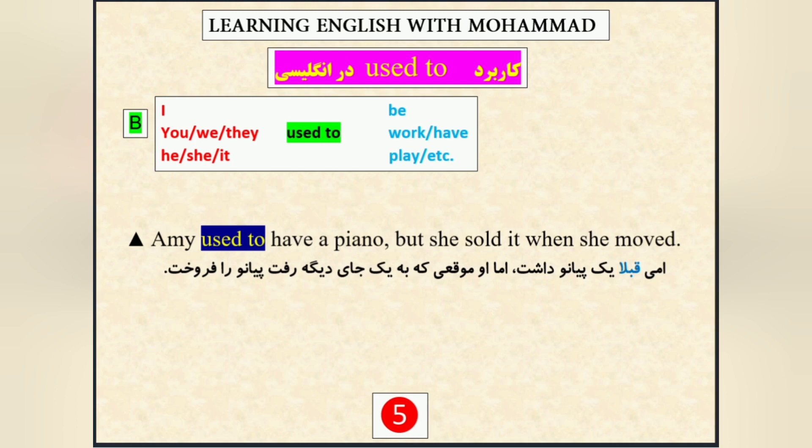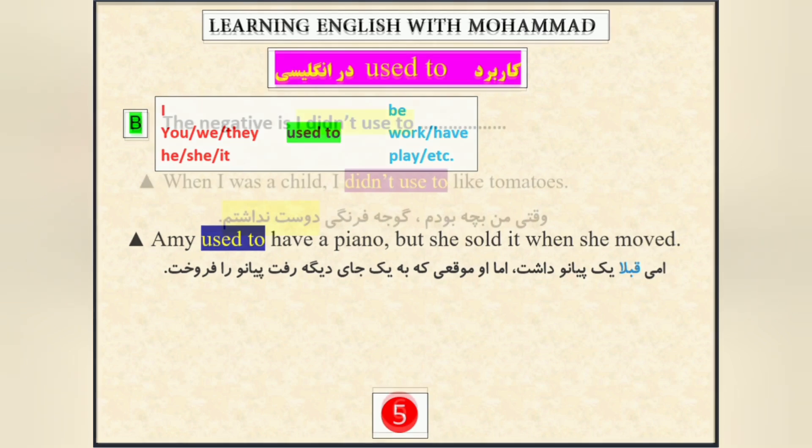اما اون موقعی که به یه جای دیگه‌ای رفت پیانو رو فروخت. پس بعد از used to هم ببینید — شکل ساده‌ی فعل اومده. Have دلالت به گذشته داره.